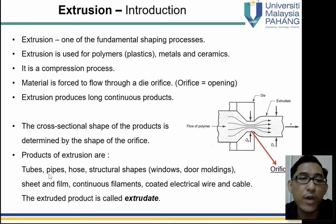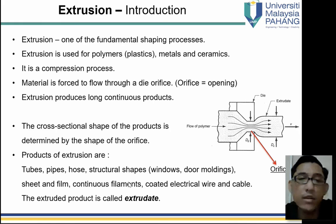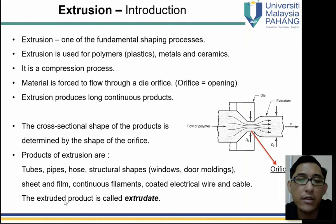Extrusion products include: tube, pipe, hose, structural shapes, window, door molding, sheet, continuous filament, coated electric parts, wire, and cable. The product of the extrusion process is called an extrudate.